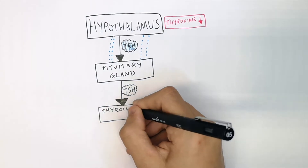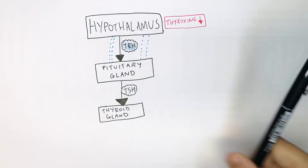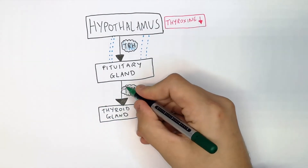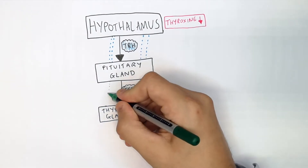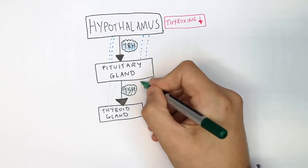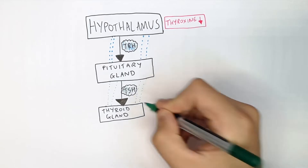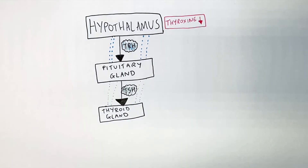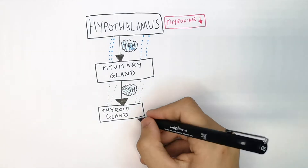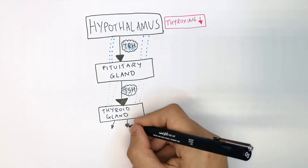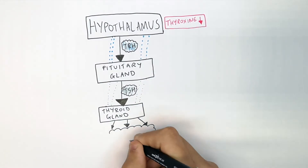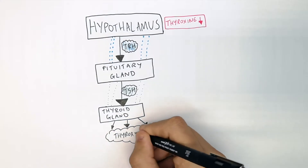TSH travels to the thyroid gland. The pituitary gland secretes TSH, which then goes to the thyroid gland, and this stimulates the production of thyroxin.